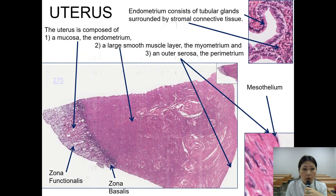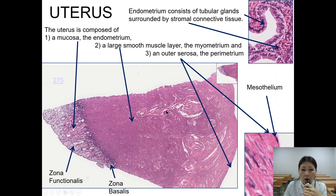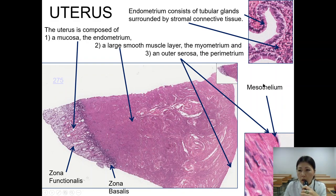The body and fundus have three layers: endometrium, myometrium, and adventitia and serosa. As you can see on this diagram, it shows the histological structure of the uterus. This is the mucosa layer — the endometrium — which has two zones: zona functionalis and zona basalis. This is the myometrium, the large smooth muscle layer, and the outer layer is the serosa or perimetrium, composed of mesothelium.